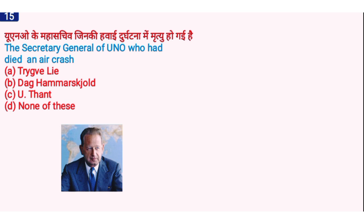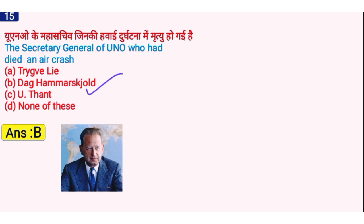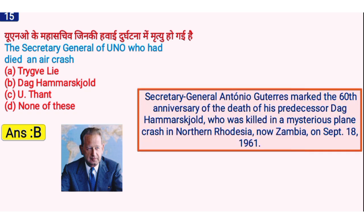The Secretary-General of UNO who died in an air crash was? The right answer is option B, Dag Hammarskjöld. He was the Secretary-General of UNO who died in an air crash. Antonio Guterres marked the anniversary of the death of his predecessor Dag Hammarskjöld, who was killed in a mysterious plane crash in northern Rhodesia — now Zambia — on September 18, 1961.